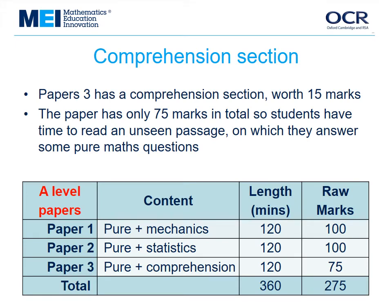The current MEI spec has a comprehension paper as part of core four. We asked teachers about whether we should keep it for the new spec and how we could improve it. As a result, we have kept the comprehension, but we've changed it a bit. It's in paper three. You'll note that's only 75 marks, so that there's reading time for the comprehension passage.